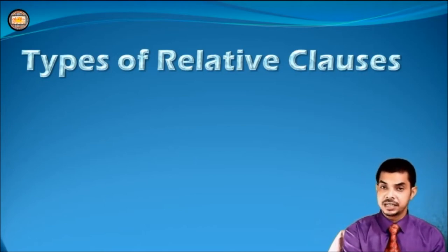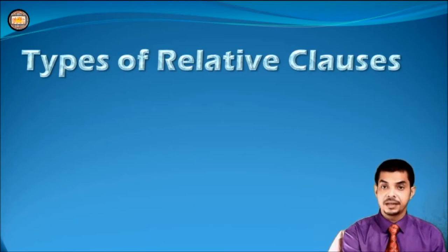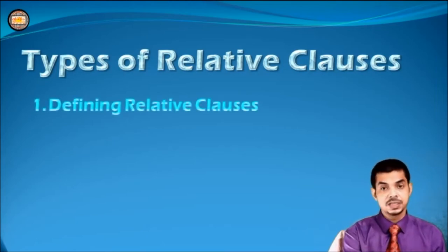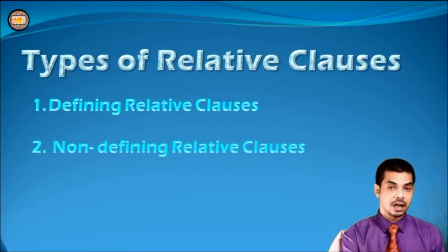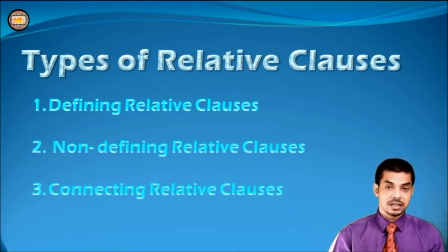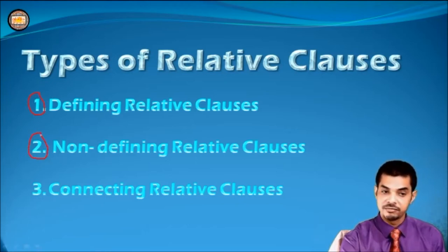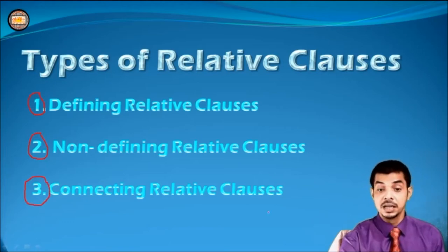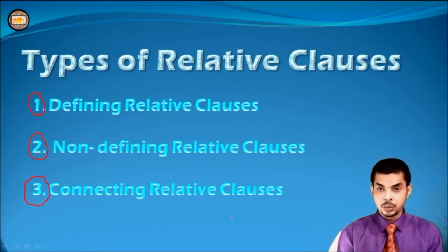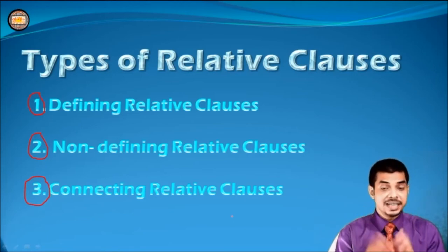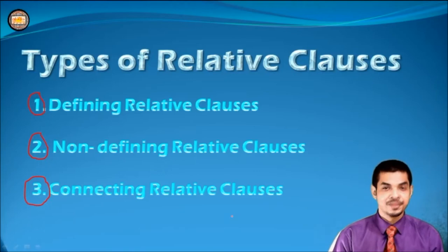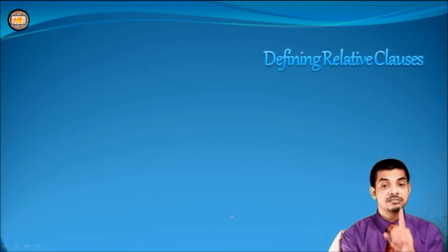Dear friends, relative clauses are basically of three types. They are: defining relative clauses, non-defining relative clauses, and the third one which we call connecting relative clauses. Just remember these three: number one, defining; number two, non-defining; and number three, connecting relative clauses. The clue for our formation and handling of relative clauses lies in their types.